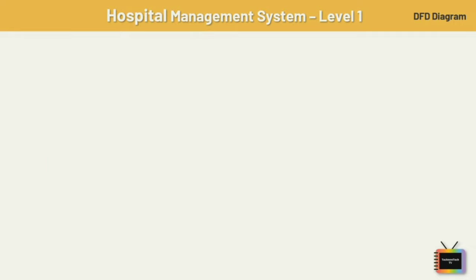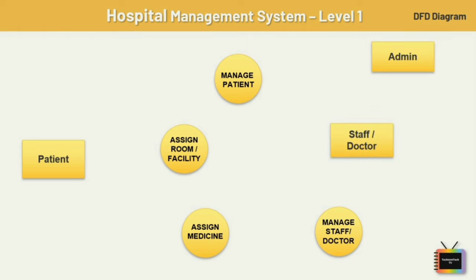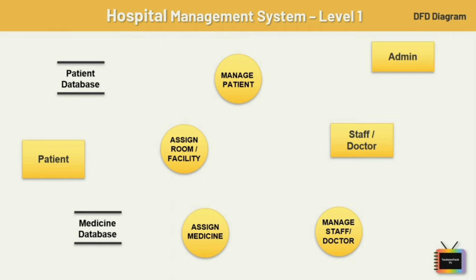Now let's look at the level 1 DFD diagram. The first level shows more emphasis on the concept of the context diagram and is considered the expanded version of the previous diagram. Here I am adding four processes: patient management, assigning room or facility, assigning medicine, and staff management — all sub-processes of the hospital management system. We also have three entities: patient, staff or doctor, and admin, along with three databases: patient database, medicine database, and staff database.